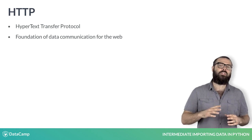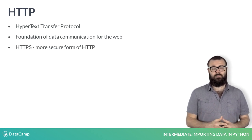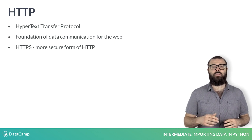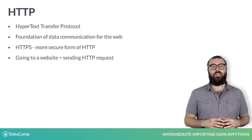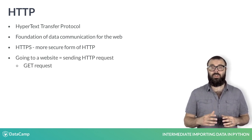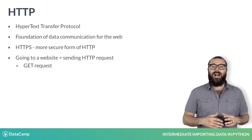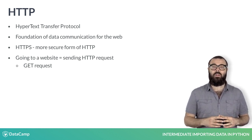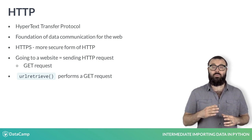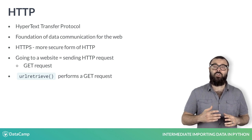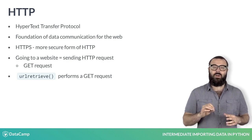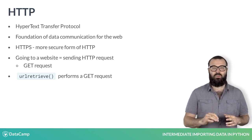Note that HTTPS is a more secure form of HTTP. Each time you go to a website, you are actually sending an HTTP request to a server. This request is known as a GET request, by far the most common type of HTTP request. We are actually performing a GET request when using the function URL retrieve.